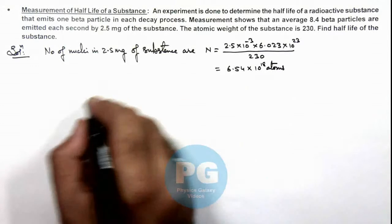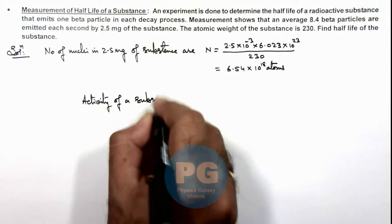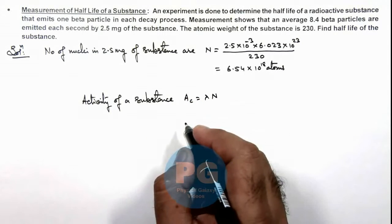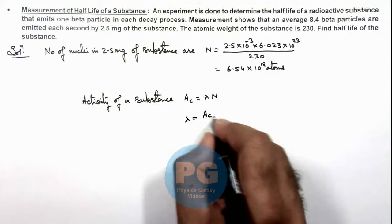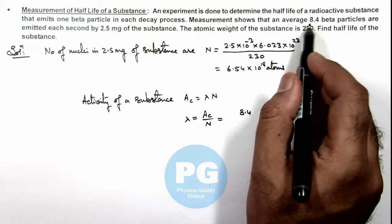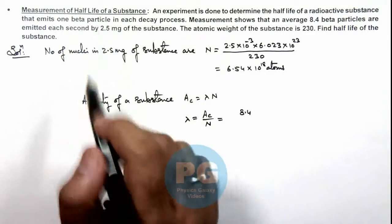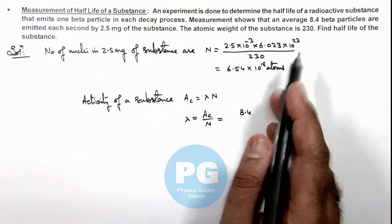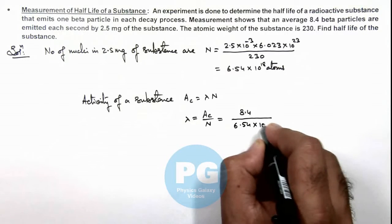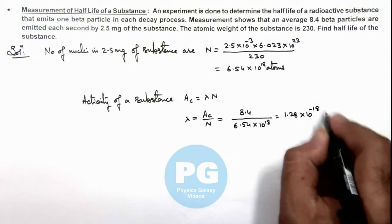Now we know that activity of a substance can be given as lambda N. If we substitute the values here, lambda can be given as activity by number of atoms, that is equal to 8.4. Because we are given that 8.4 beta particles are emitted per second and in each decay process one beta is emitted, so activity is 8.4 disintegrations per second, divided by the number of atoms 6.54 × 10^18, which is equal to 1.28 × 10^-18 per second.